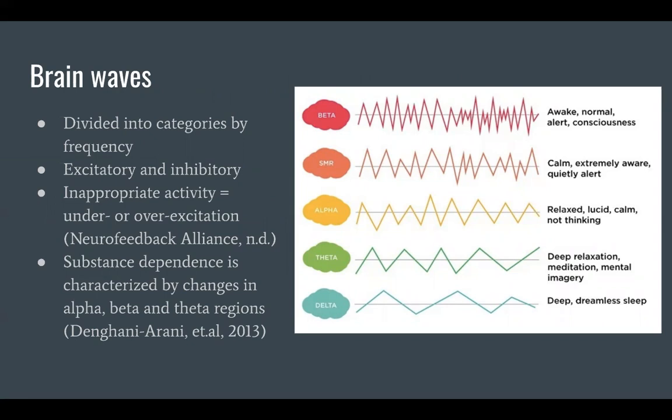Different brainwave activity involves different types of brainwaves, as some are excitatory and some are inhibitory. Therefore, inappropriate brainwave activity may lead to over-excitatory behaviors, like fidgeting and agitation, or under-excitatory behaviors, like drowsiness or lack of concentration.